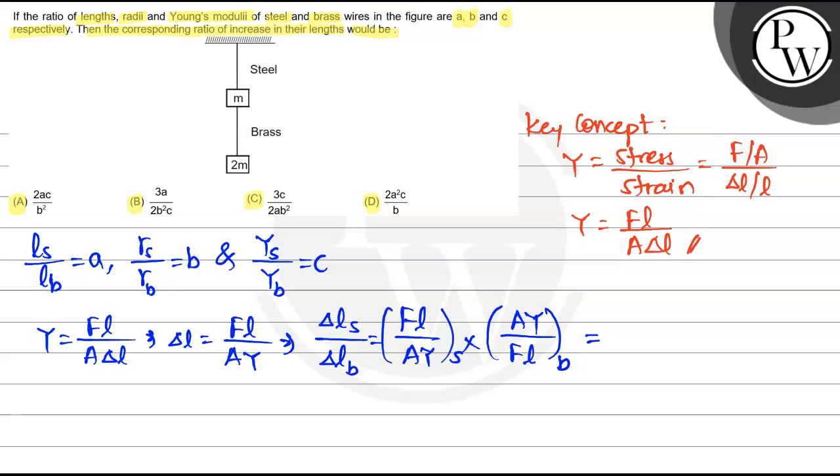Let's write this ahead: force of steel by force of brass into length of steel by length of brass into area of brass by area of steel into Young's modulus of brass by Young's modulus of steel. Four functions, 1, 2, 3, 4.